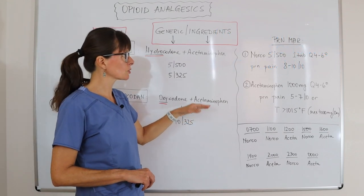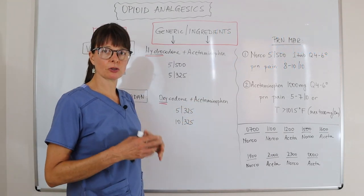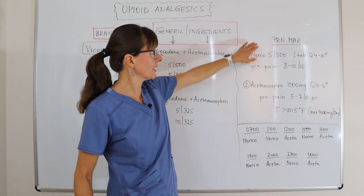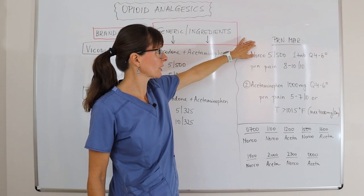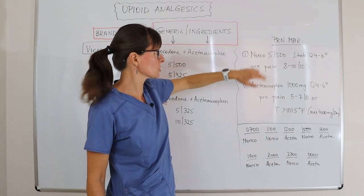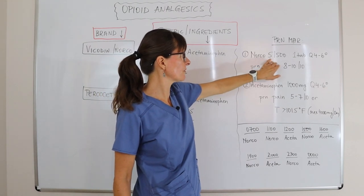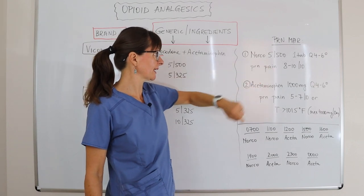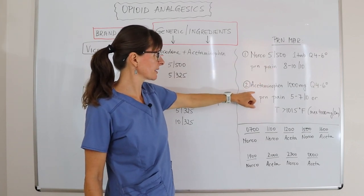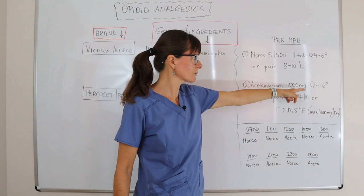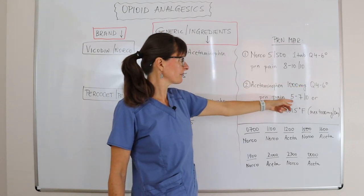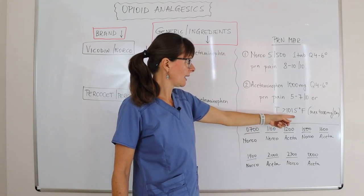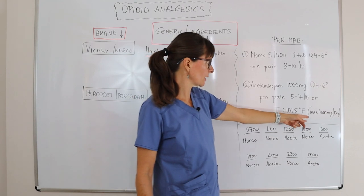This becomes critical when a patient's PRN medication list on their MAR — their medication administration record — looks like this: Norco 5-500, one tablet, Q4-6 hours, PRN pain 8-10 out of 10; and also acetaminophen 1,000 milligrams, Q4-6 hours, PRN pain 5-7 out of 10, or temperature greater than 101.5, with a max of 4,000 milligrams per day.